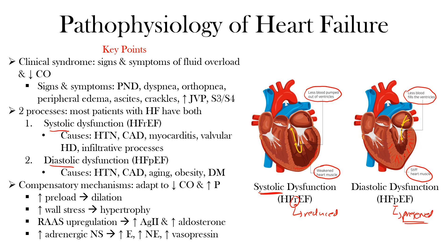Most patients with heart failure will have both processes — both systolic and diastolic dysfunction, or at least a combination of the two. The outcome of both is an increase in left ventricular filling pressures, which are transmitted backwards to the lungs and subsequently to the right ventricle and the body. That backward pressure transmission is the main concept.